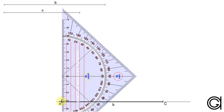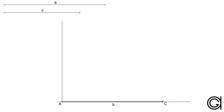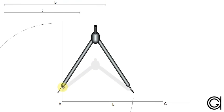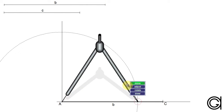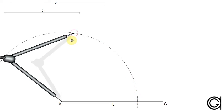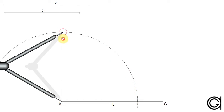Then we are going to transport the given side C onto this vertical line. Setting our compass to the length of the given side C and setting our compass on vertex A...